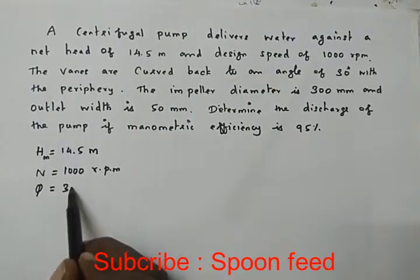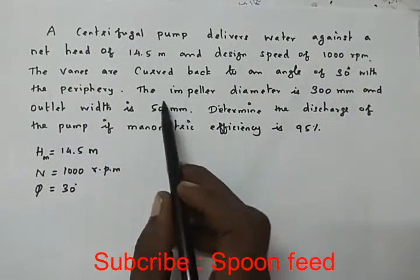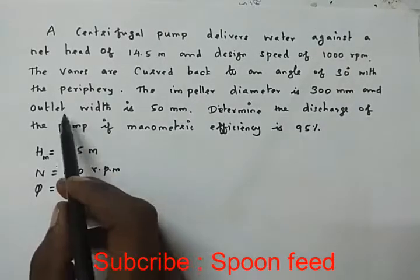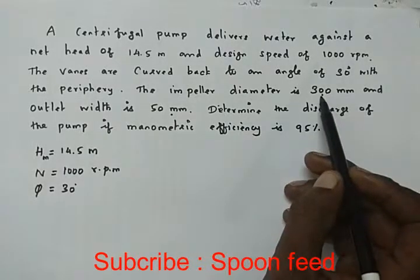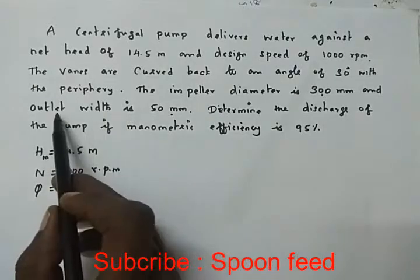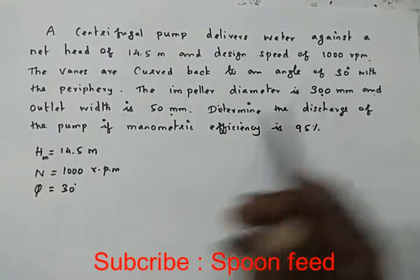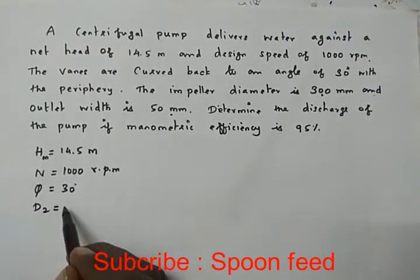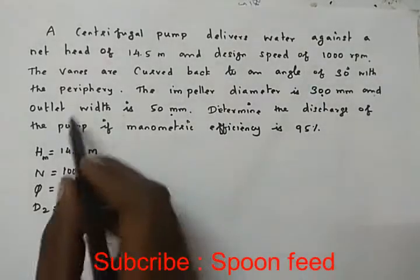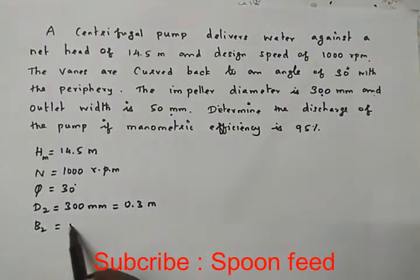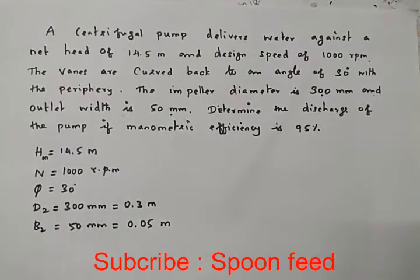The impeller diameter is 300 mm and outlet width is 50 mm. So D2 is 300 mm which equals 0.3 meters, and outlet width B2 is 50 mm which equals 0.05 meters.